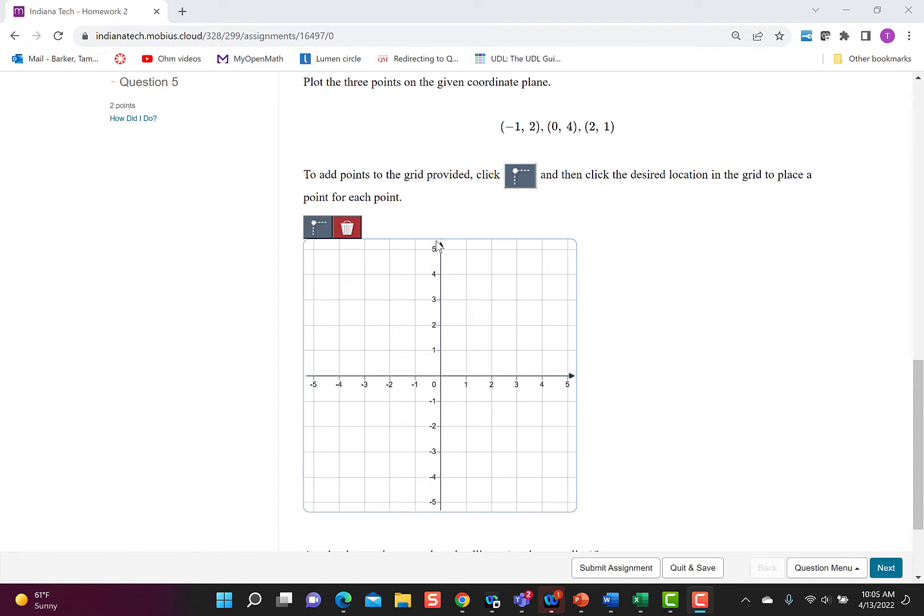The directions say to add points to the grid, click this button that looks like a dot with the lines on each side, and then click the desired location in the grid. I want you to see when you click that button it turns red, so that tells you it's activated and you are ready to plot.